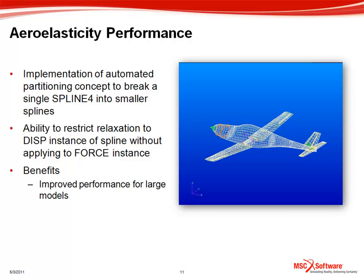This is done by breaking a single spline into a number of smaller splines. With a smaller set of grids for each spline, the required matrix operations are applied to smaller systems which results in better performance. Equally important, the resulting spline matrices are less dense so that the subsequent operations such as partitioning and multiplications are faster and also require less disk space.